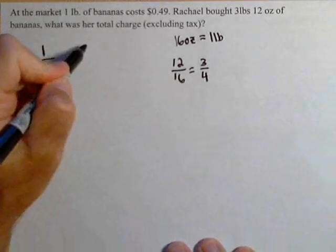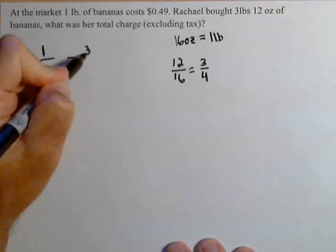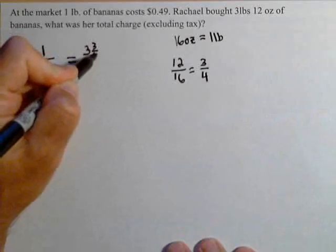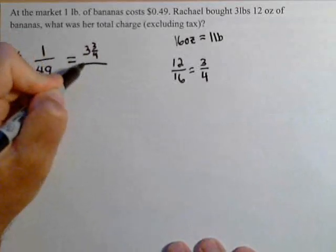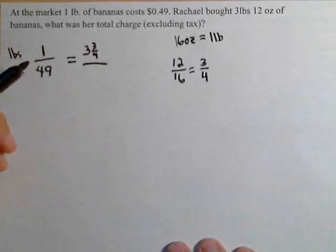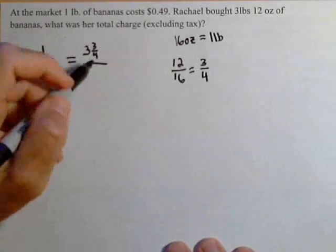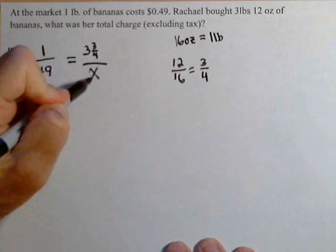We know that this one on top will be 3 and 3 quarters pounds, and the cost will be on bottom. So, maybe we should write the cost of bananas, and that's what we're looking for. We'll call that x.